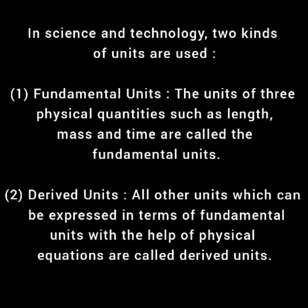In science and technology, two kinds of units are used. First, fundamental units: the units of three physical quantities such as length, mass, and time are called the fundamental units. Second, derived units: all other units which can be expressed in terms of fundamental units with the help of physical equations are called derived units.